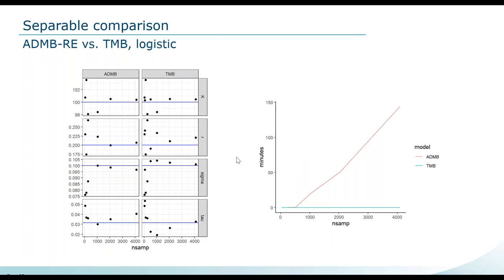Comparing the ADMB separable model and the TMB separable model, parameter estimates are on par between the two approaches. However, the TMB model performs faster than ADMB as sample size increases.